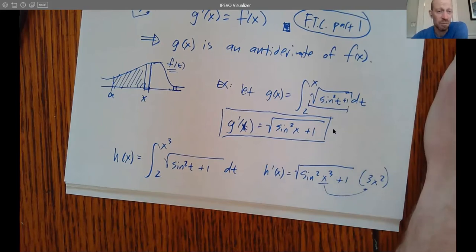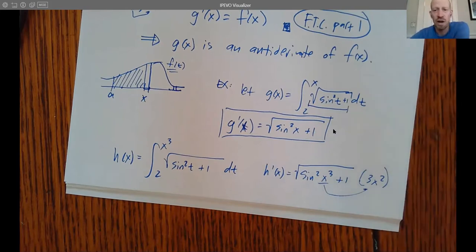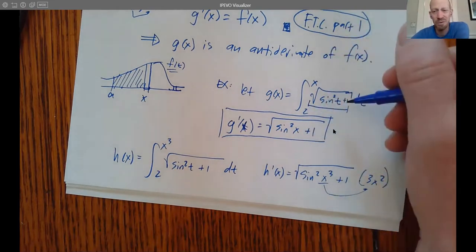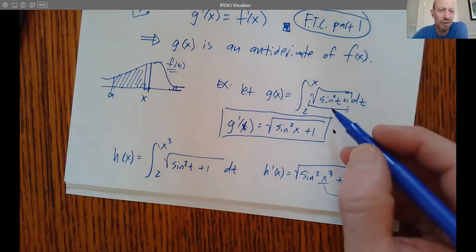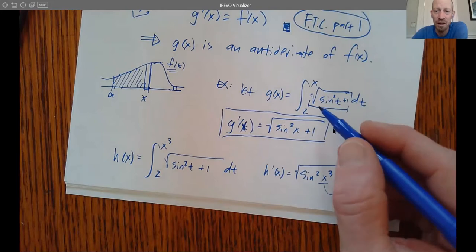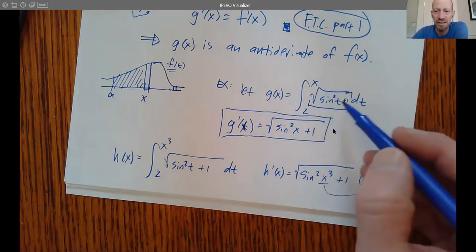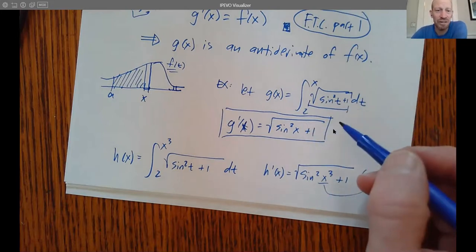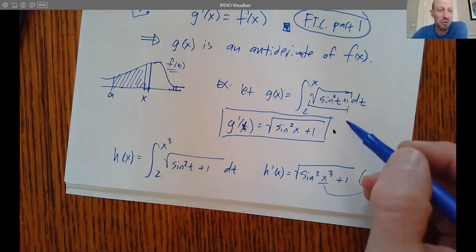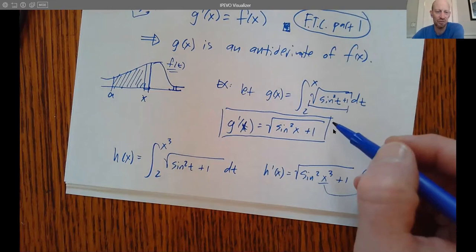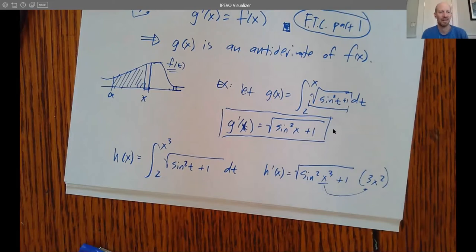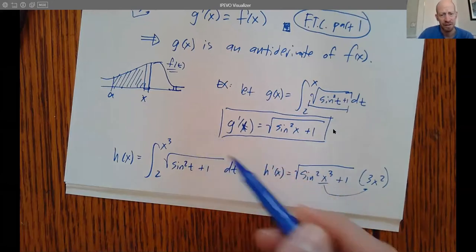This derivative rule can cause students trouble, partly because the new FTC derivative rule is hard to process and adding the chain rule on top of that can feel overwhelming. It can also be tricky because it looks almost too easy — it seems like you're just dropping the integral symbol and replacing t with x — but there are substantial mathematical reasons behind what we're doing.